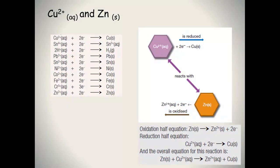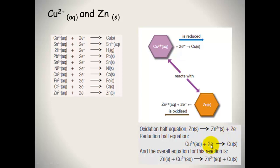So our reactions are: the oxidation half equation is zinc solid → Zn²⁺ (aqueous) plus two electrons. The reduction half equation is Cu²⁺ plus two electrons → copper solid. Now you just add those two together, making sure your electrons are balanced — there are two electrons being produced and two being used. So the overall equation is: zinc solid + Cu²⁺ (aqueous) → Zn²⁺ (aqueous) + copper solid.